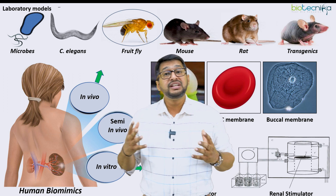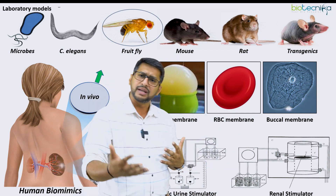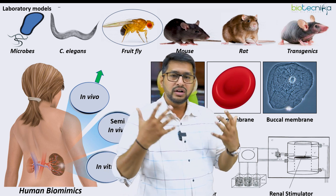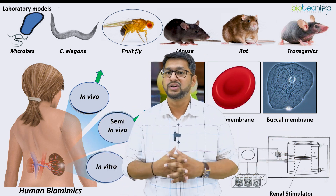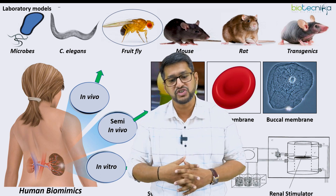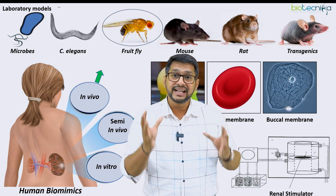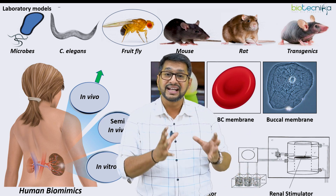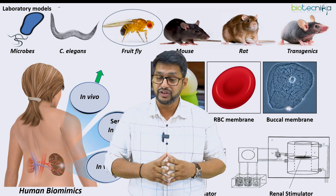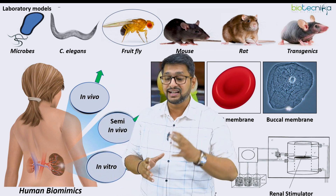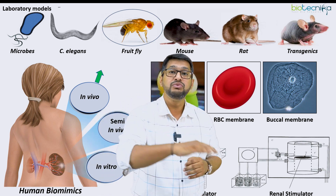So what are the various models? To study the interaction of a phytochemical, chemical, or nutraceutical on an oxalate stone, we need to refer to certain models because we cannot directly work on patients. What are the laboratory experimental models? We can take up microorganisms and study this. We can take up a nematode called C. elegans. We can study using Drosophila, mouse, rat, and even transgenic varieties. These are the in vivo models.